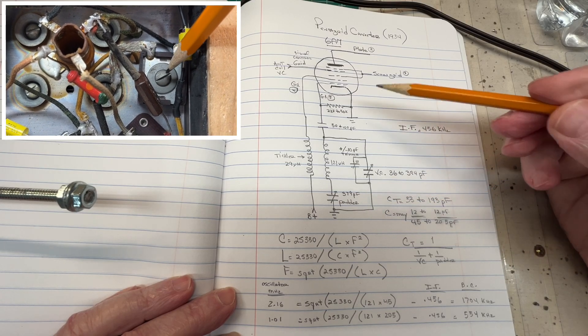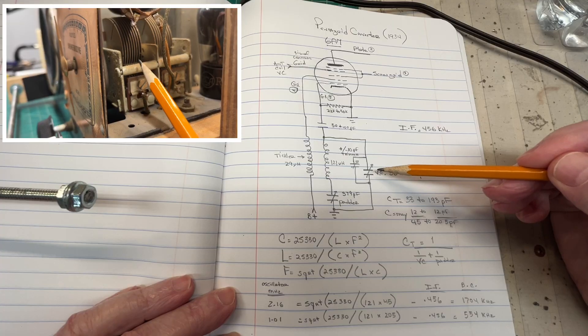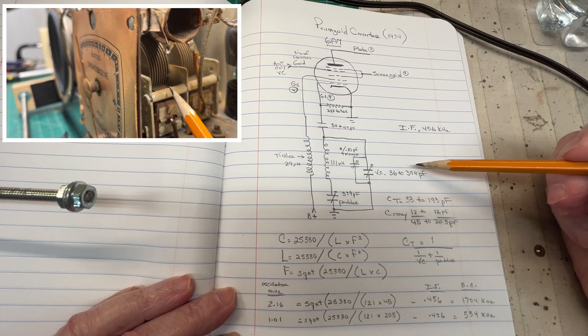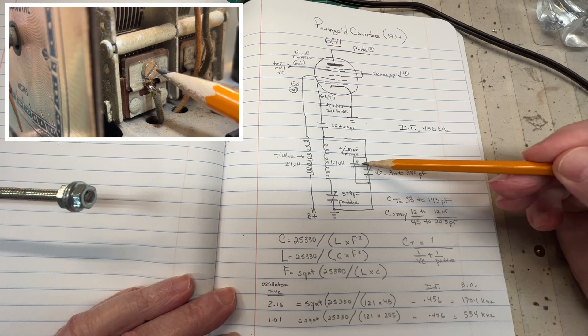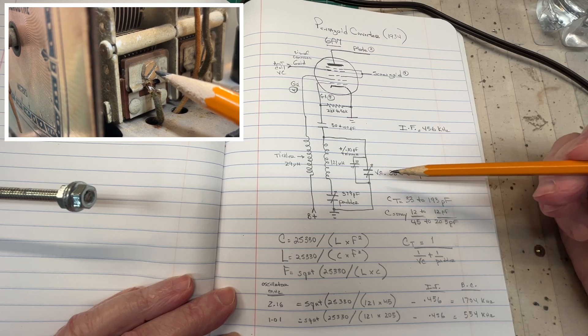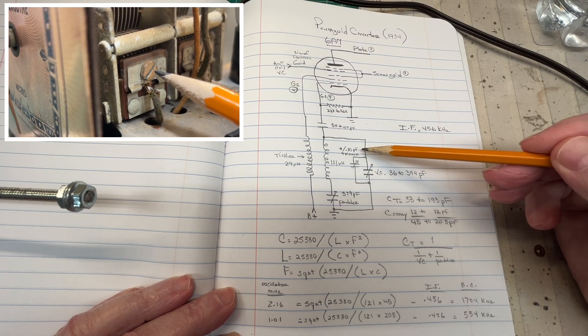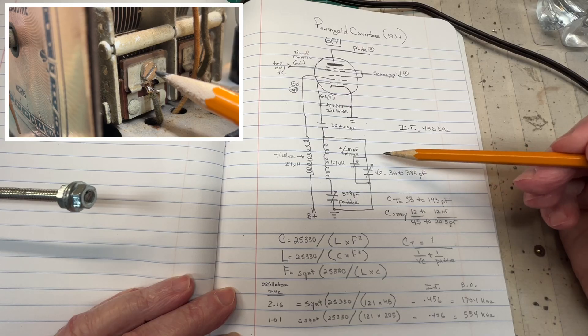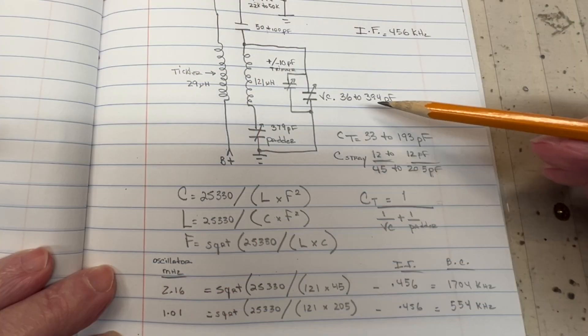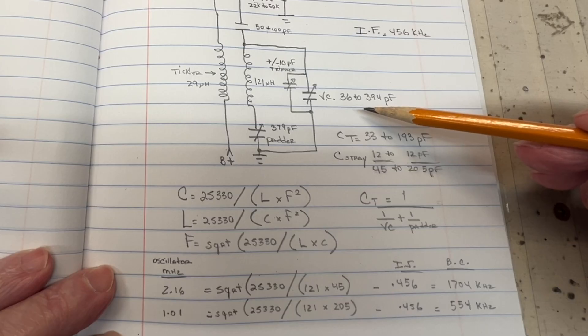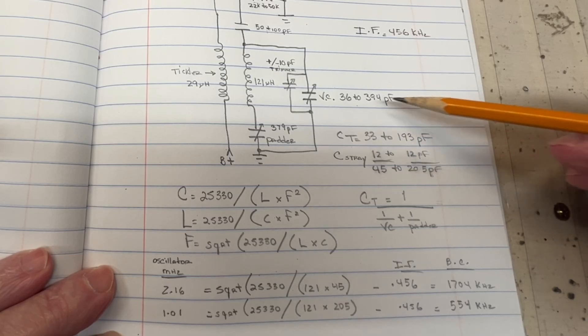And again, all this attaches back to the main variable condenser or variable capacitor. And of course, there's a trimmer on this one as well. Typical range of those is plus or minus 10 pF for additional adjustments. Measuring the variable capacitor at a circuit, 36 to 394 pF.